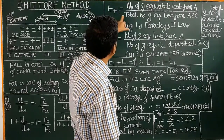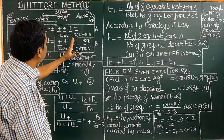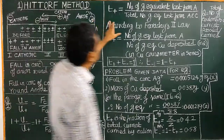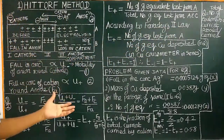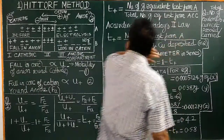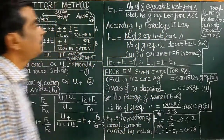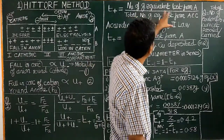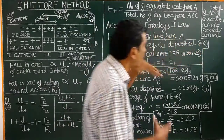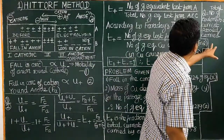The transport number of the cation T+ equals the number of gram equivalents of silver cation lost from the anodic compartment divided by the total number of gram equivalents — the total falling concentration from both compartments. According to Faraday's second law, T+ equals number of gram equivalents lost from the anodic compartment divided by total current passed through the ionic solution.